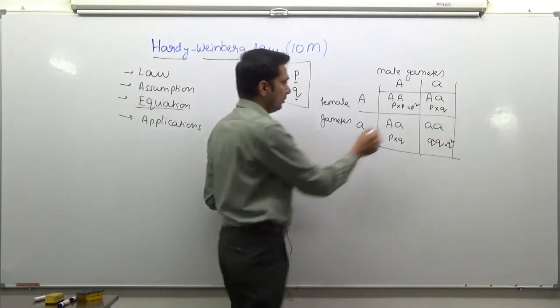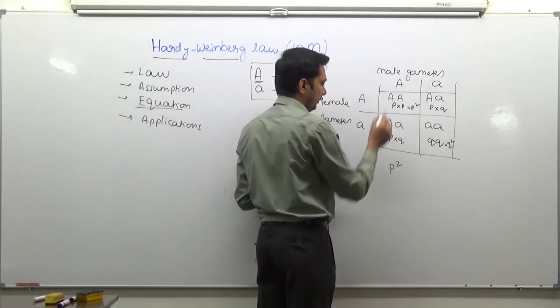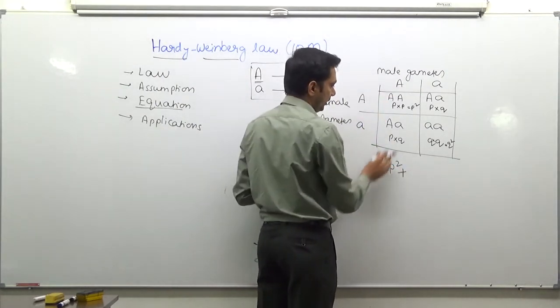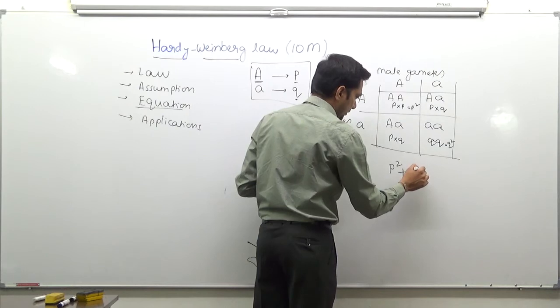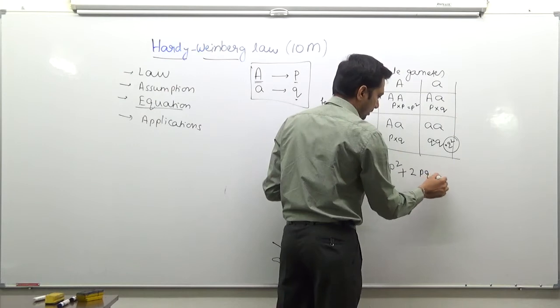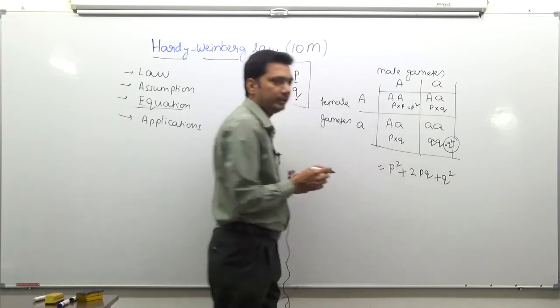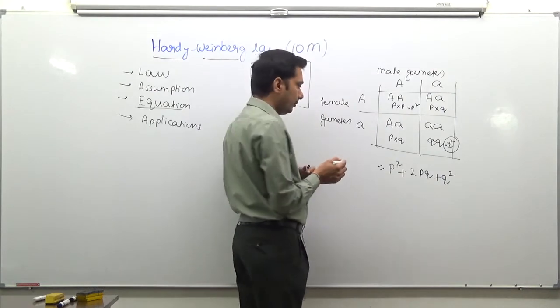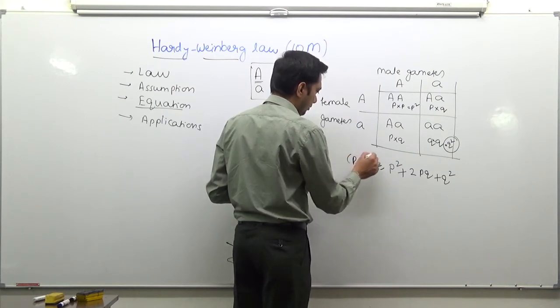If we write them together, if you actually notice that we have P square for frequency of dominant alleles, and if the frequency of heterozygous condition we have two such situations so that will be 2PQ, and then we have a situation where there is only one recessive allele. So, P square plus 2PQ plus Q square. You can probably recollect that this is an equation that most of us are familiar with, a simple algebraic equation where we are talking about P plus Q whole square.